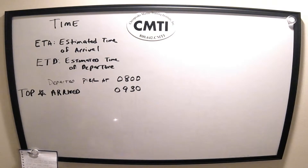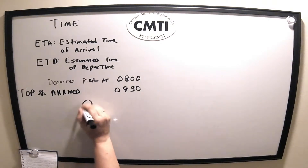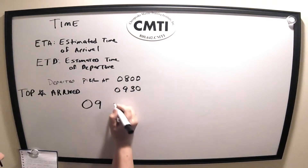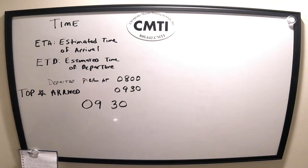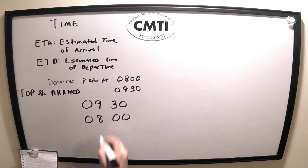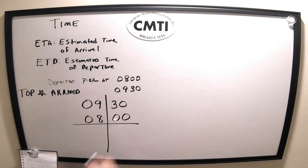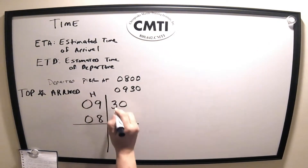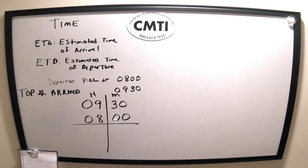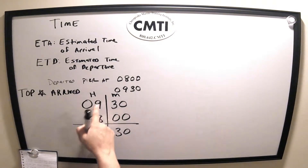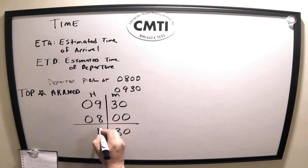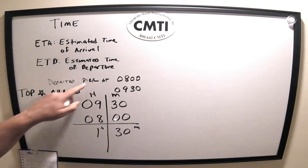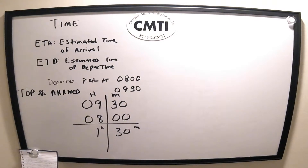When we do math, we always separate the hours and the minutes — hours to the left and minutes to the right. We put the departure time underneath: 0800. We use what's called a time T to separate the hours and the minutes. So we take 30 minus 0, which gives us 30. Then 9 minus 8 gives us 1. So it took 1 hour and 30 minutes to proceed from the pier to the arrival point.